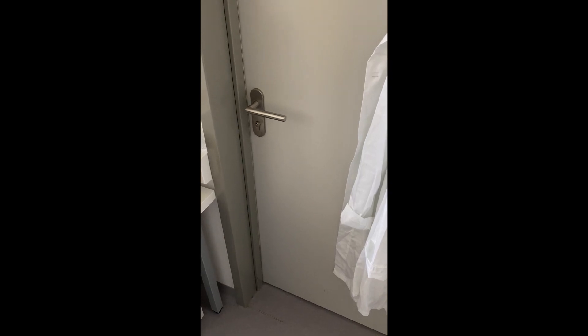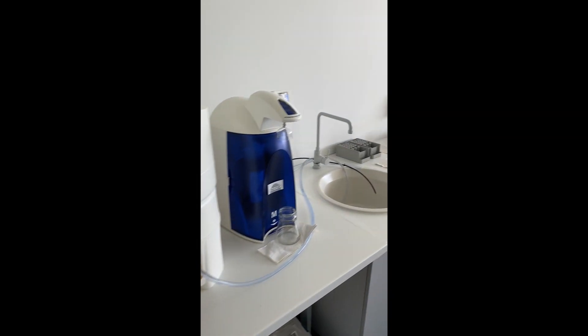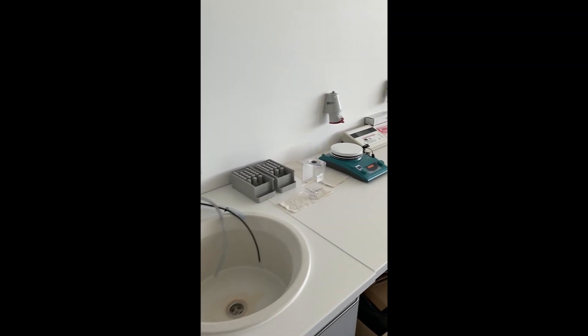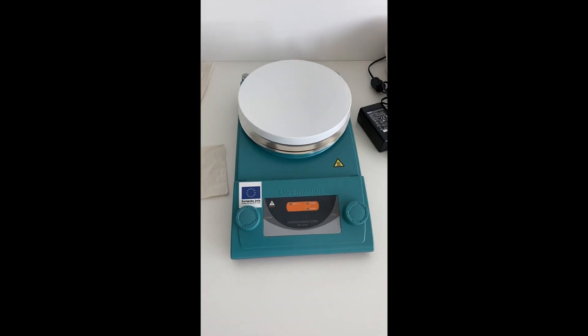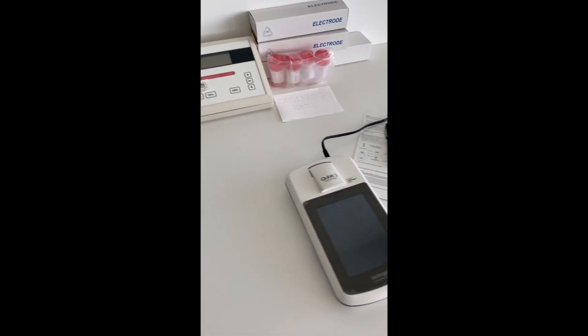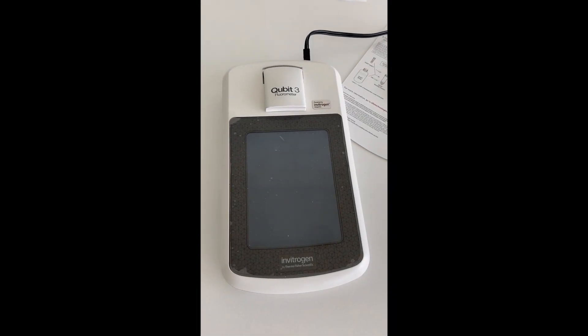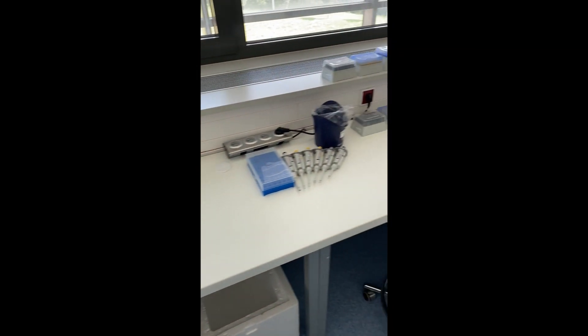This part of our laboratory contains equipment for basic sample processing. Here you can see the Millipore water purification system, the apparatus for ultra-pure water, a magnetic stirrer with heating, and the Qubit quantitative fluorometer. This room also contains tables with pipettes and tips, which are an essential part of every modern laboratory.